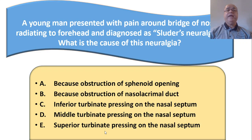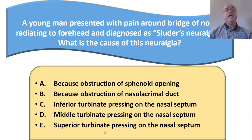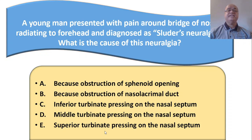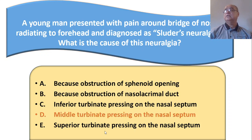A young man presented with pain around the bridge of the nose relating to the forehead and was diagnosed with Sluder's neuralgia. The cause is that the middle turbinate is pressing on the nasal septum due to hypertrophy of the middle turbinate.